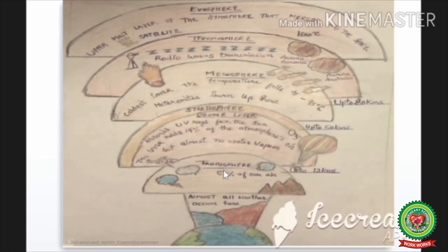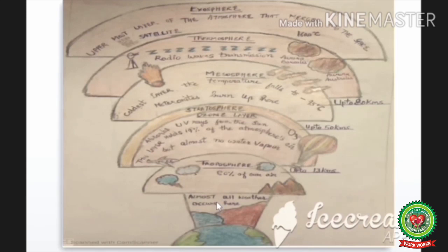Our atmosphere has several layers: troposphere, stratosphere, mesosphere, thermosphere, and exosphere. The first layer is the troposphere, where 80% of the air we breathe is available. Almost all weather conditions occur here — rain, hail, snow, fog, smoke. It extends up to a height of 13 kilometers.